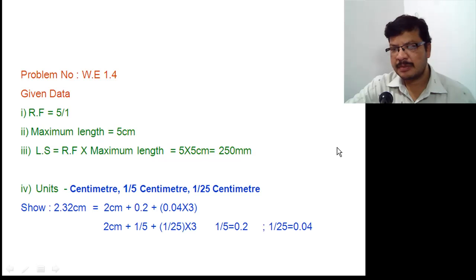In this tutorial, I will explain a diagonal scale problem. The given data is: RF is 5/1, and maximum length equal to 5 cm.